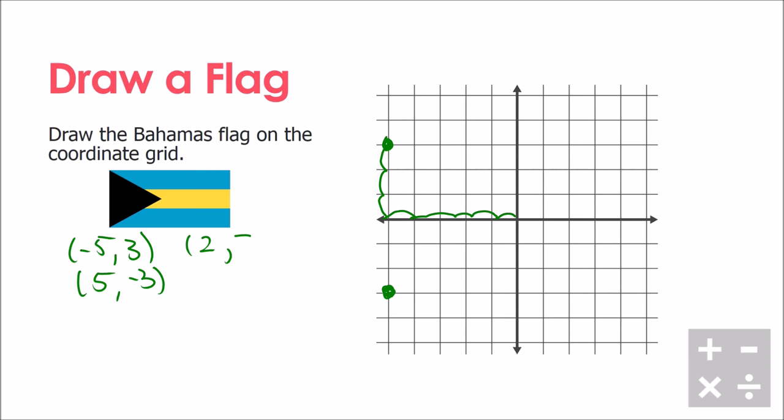Our next point is going to be two, comma three, so I'm going to go over two, up three, right here. Then we're going to have two, comma negative three. You'll notice this is just a big rectangle - this is going to end up being the shape of our flag, the outer edge of the flag.